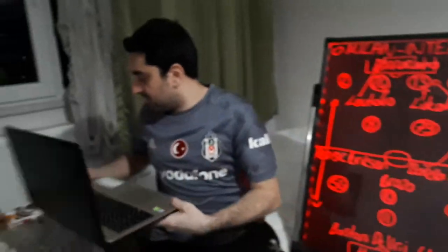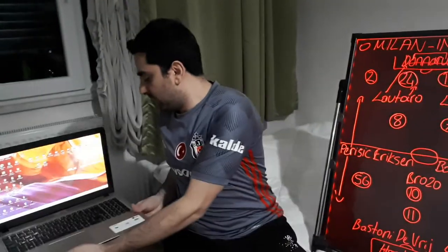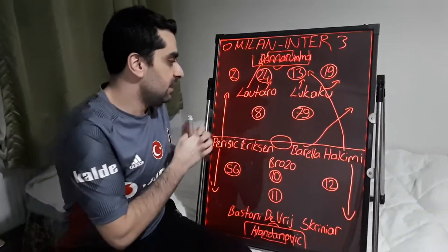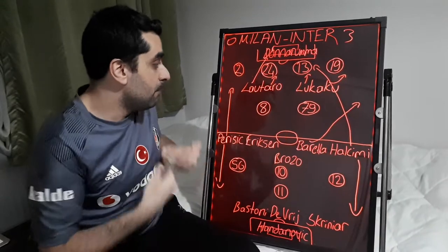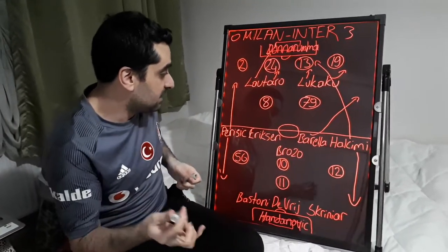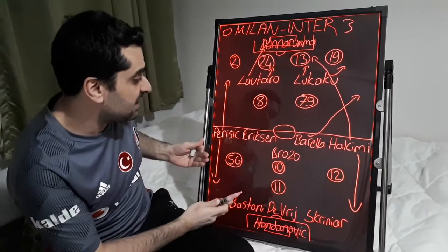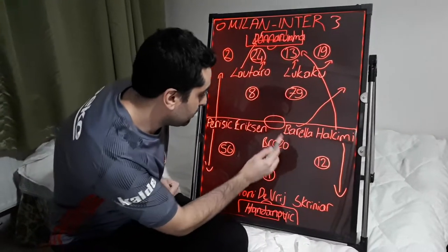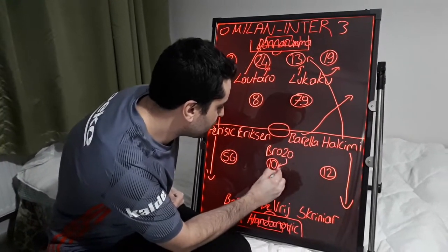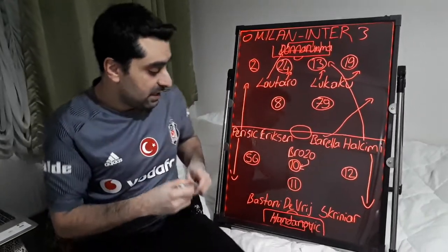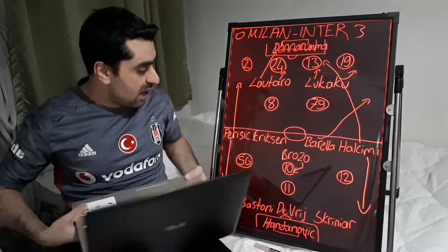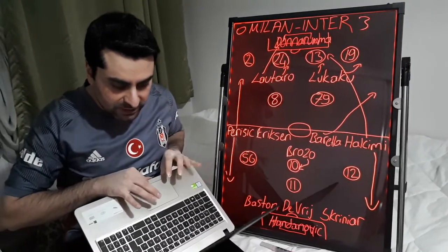In the second half, Inter went on to play better against Milan. Brozovic in midfield played close to Hakan Çalhanoğlu. Brozovic played close to Hakan Çalhanoğlu — you can see it here.